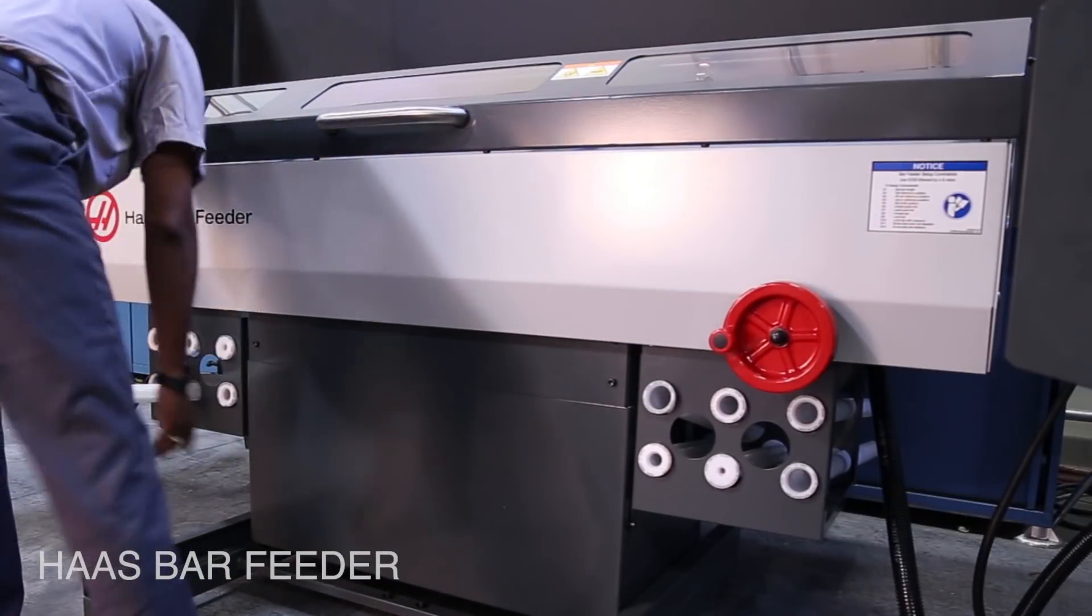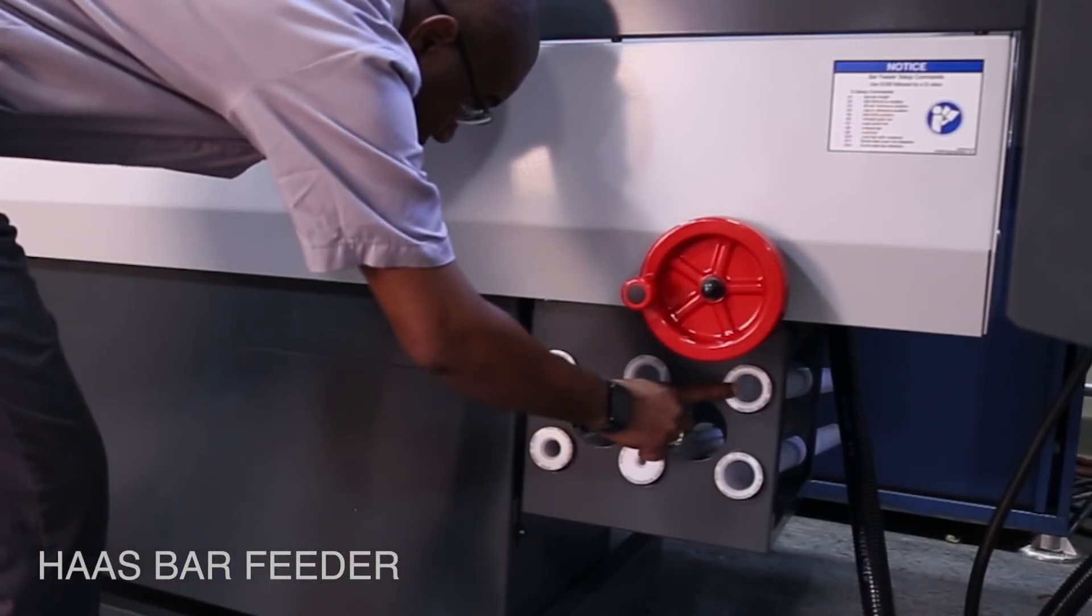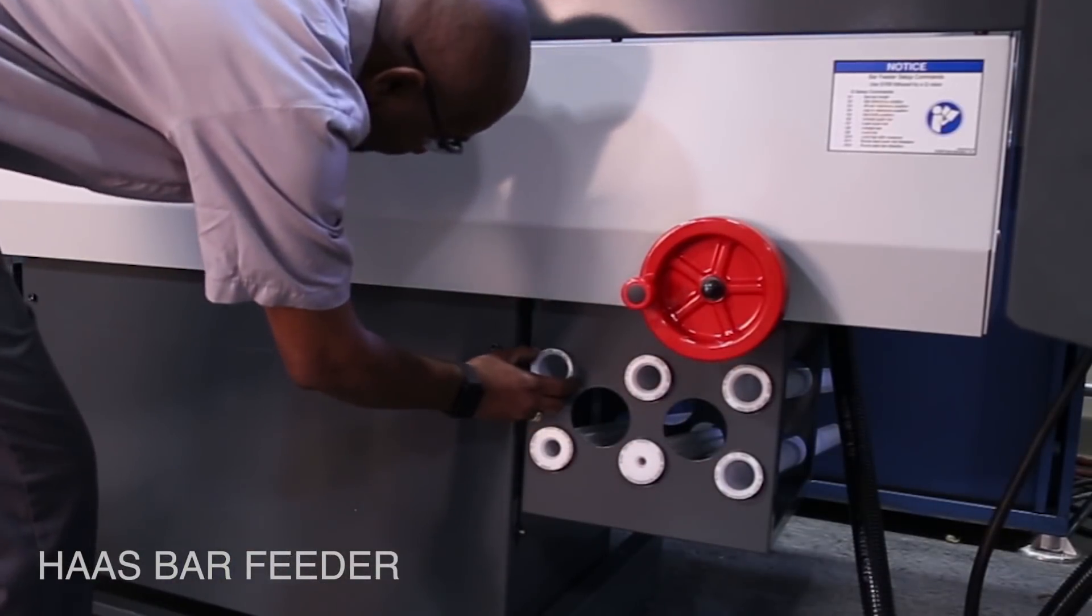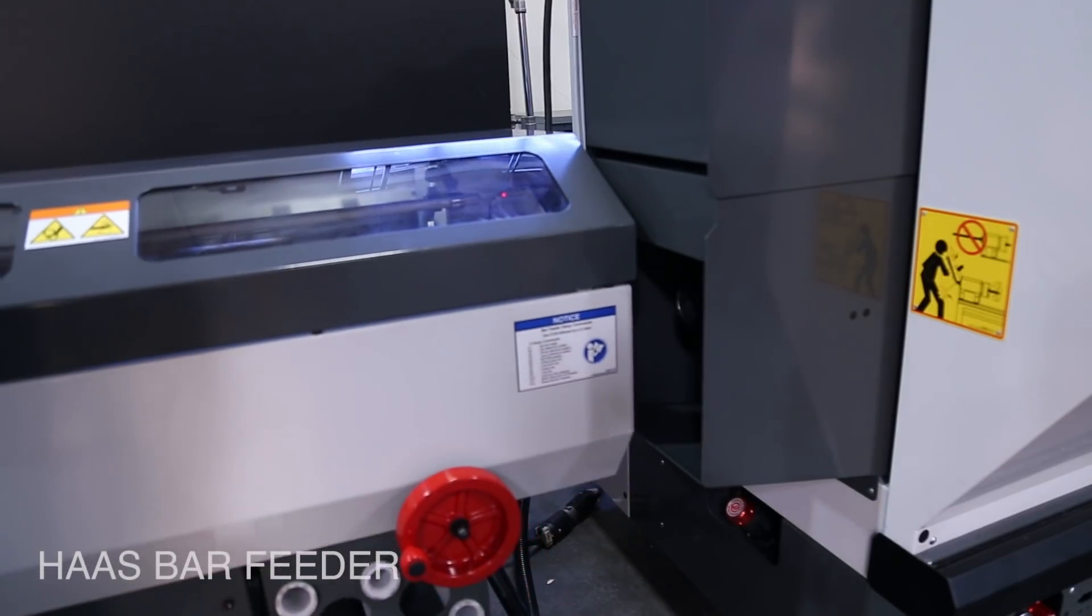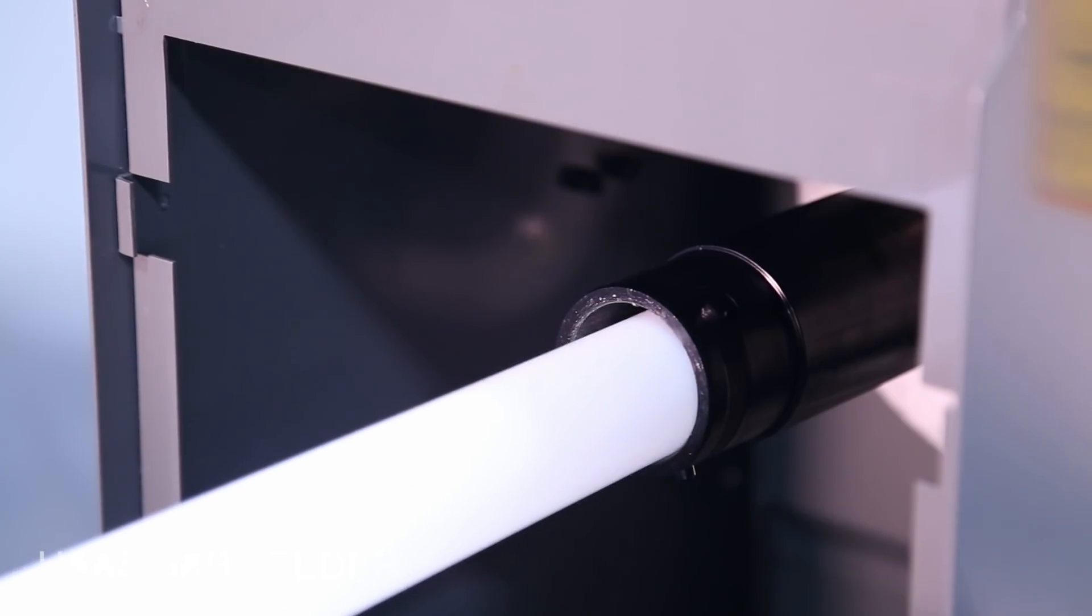Changing out spindle liners is simple thanks to its unique design. Quickly find the liner you need from where they're conveniently stored at the front panel. Slide the unit back and out of the way to gain full access to swap them out.